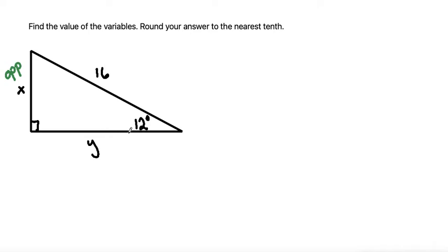The side that's touching but is not opposite from the right angle is the adjacent side. And the side that's opposite from the right angle is the hypotenuse. From here, now that we've identified our sides,